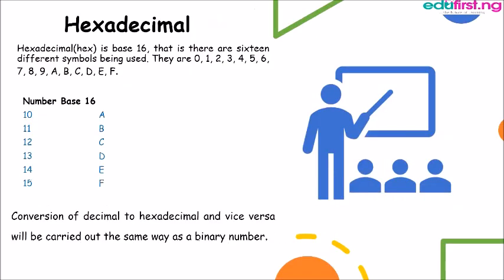Hexadecimal. Hexadecimal is base 16. That is there are 16 different symbols being used. They are 0, 1, 2, 3, 4, 5, 6, 7, 8, 9 and from 9 we move to A, B, C, D, E, F.